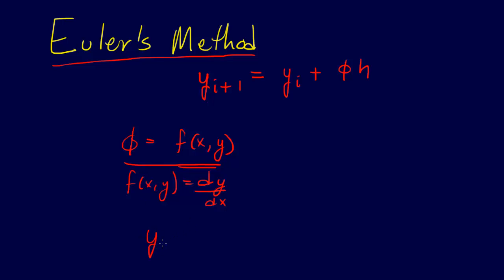So what that becomes then is yi plus 1 is equal to yi plus f(x,y) times h. So that's it. That's the formula.